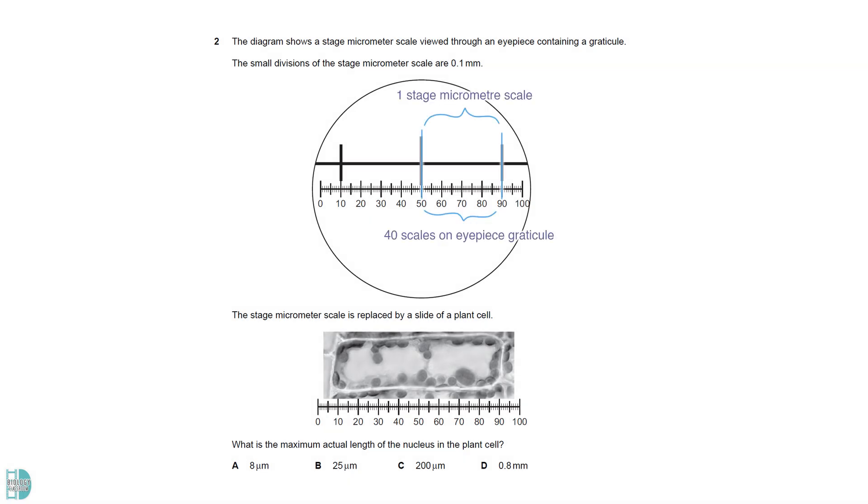Four scales on the eyepiece graticule align to one stage micrometer scale. The small divisions of the stage micrometer scale are 0.1 mm or 100 micrometers. So, one eyepiece scale is 2.5 micrometers. The nucleus of the cell measured 10 eyepiece scales. The actual diameter of the nucleus is 25 micrometers.